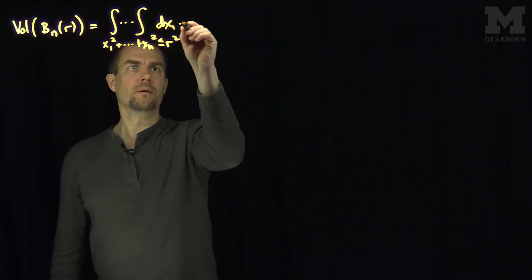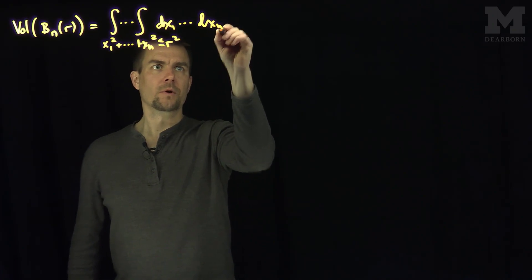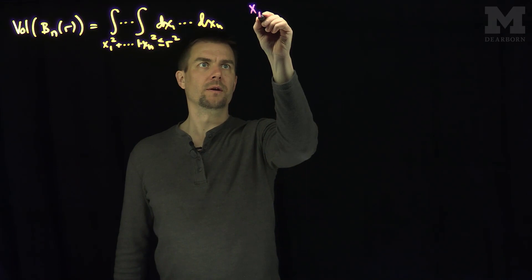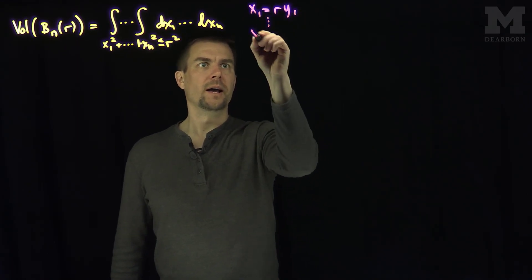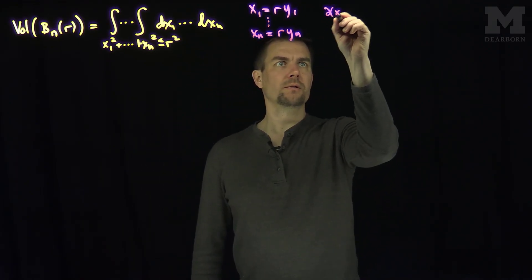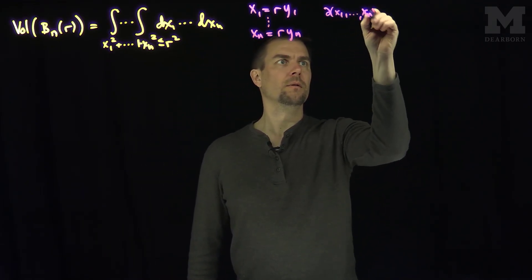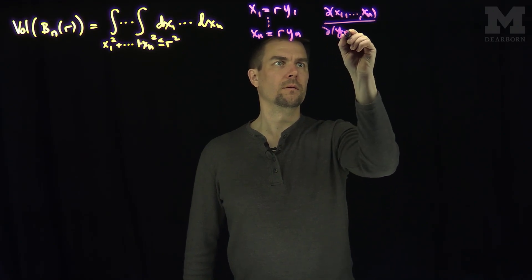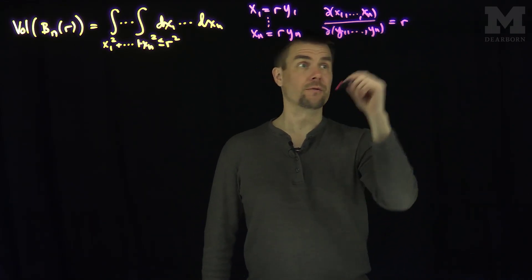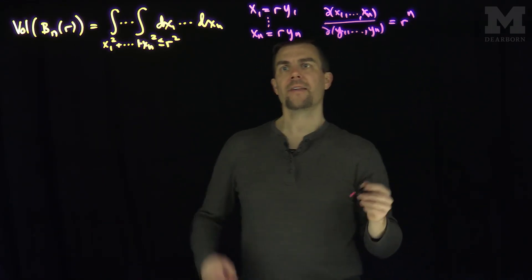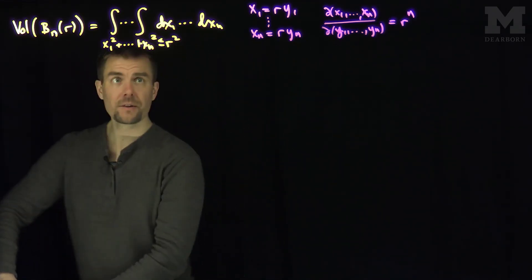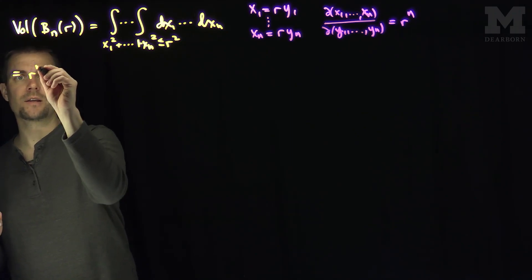We have dx1 through dxn. We'll change coordinates by letting x1 = r·y1 and xn = r·yn. Then the Jacobian of this transformation will just be r to the n, because there's a linear relationship in each variable. The y1 through yn will lie in the unit ball, and this integral will simplify to r to the n.